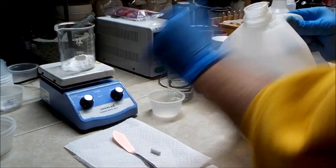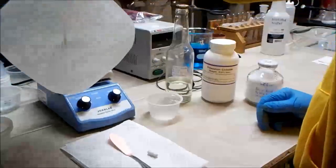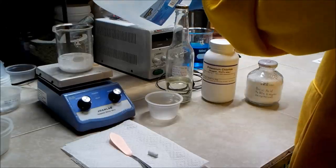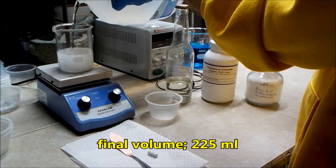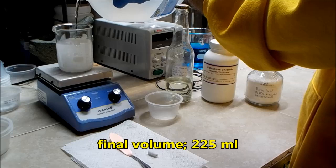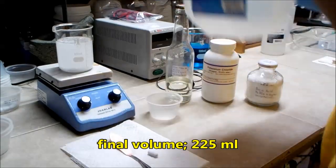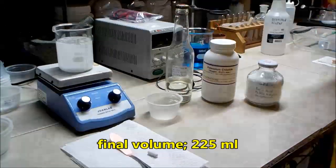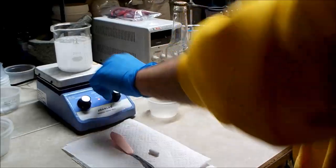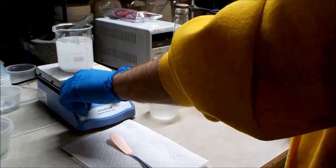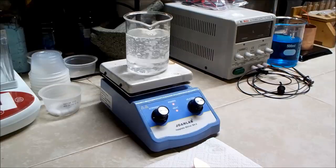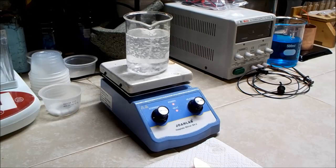I add distilled water to bring the volume up to 225 milliliters. I apply some heat and a magnetic stir bar to get everything dissolved. The boric acid is the slowest to dissolve into solution.